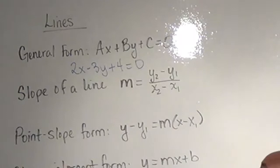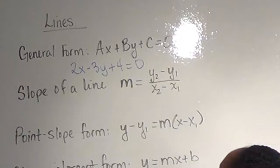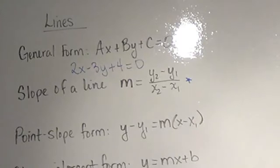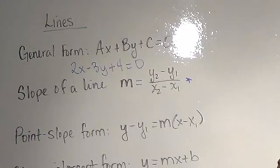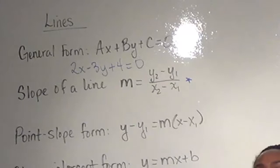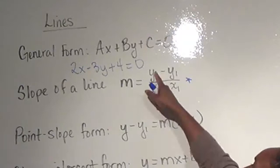The slope of a line is one of the first formulas for linear equations that you are definitely going to want to know, and it will come back in later classes. If I have two points, (x₁, y₁) and (x₂, y₂), then the slope is just the change in the y values over the change in the x values. It doesn't matter which point is first as long as you're consistent — make sure the x and y coordinates match up vertically when setting up the equation.